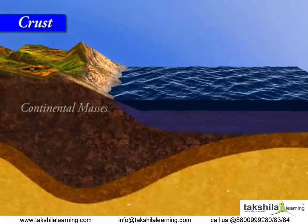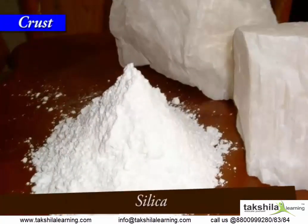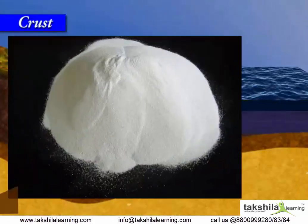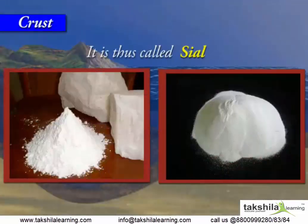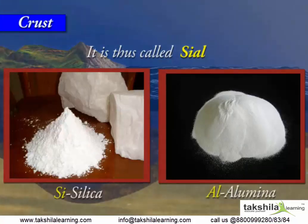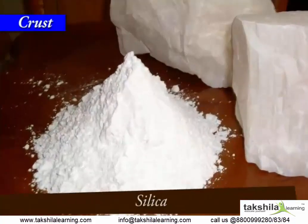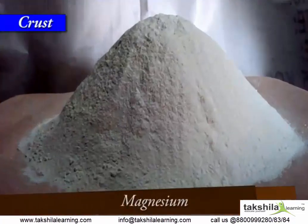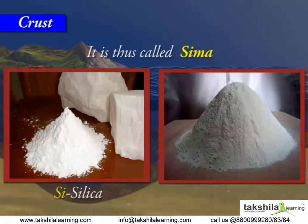The main mineral constituents of the continental mass are silica and alumina. It is thus called Sial — S for silica and Al for alumina. The oceanic crust mainly consists of silica and magnesium. It is therefore called Sima — Si for silica and Ma for magnesium.